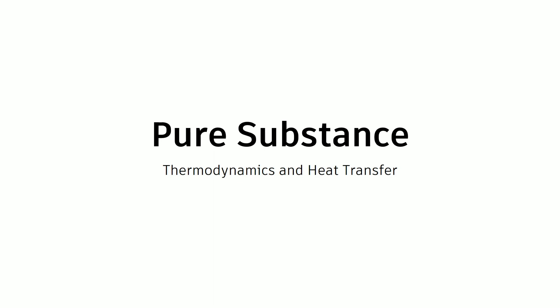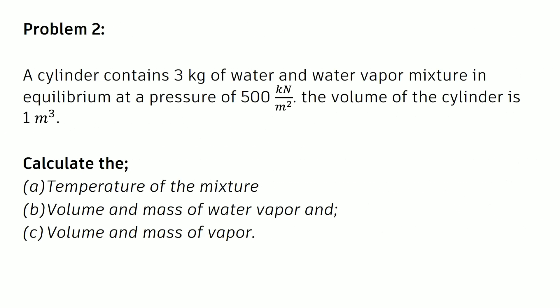Good day everyone. Today let us solve another problem regarding pure substance under thermodynamics and heat transfer. This is our part two problem. We have a cylinder that contains three kilograms of water and a water vapor mixture in equilibrium, with a pressure of 500 kilonewtons per square meter. The volume of the cylinder is one cubic meter.